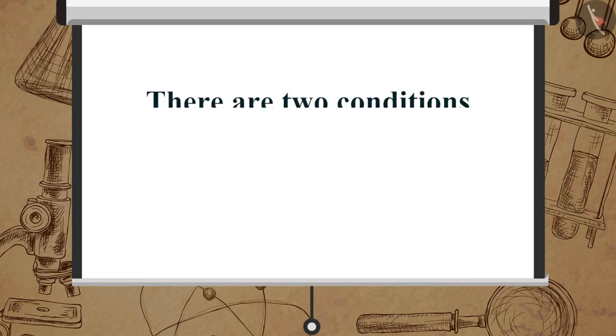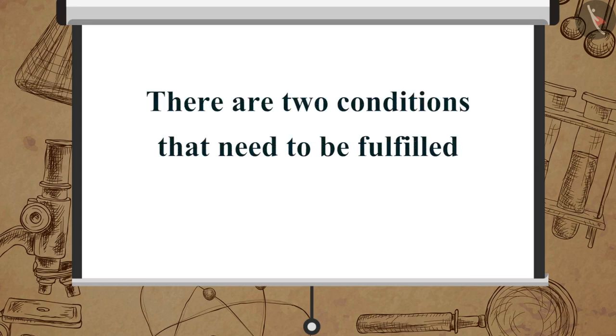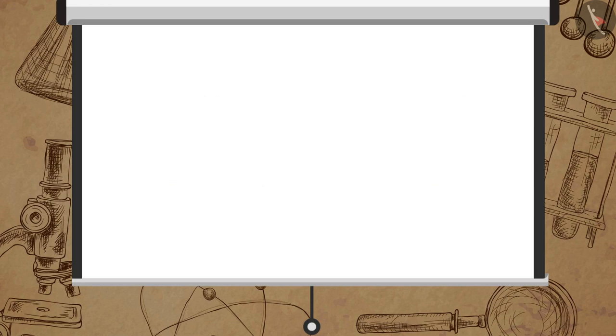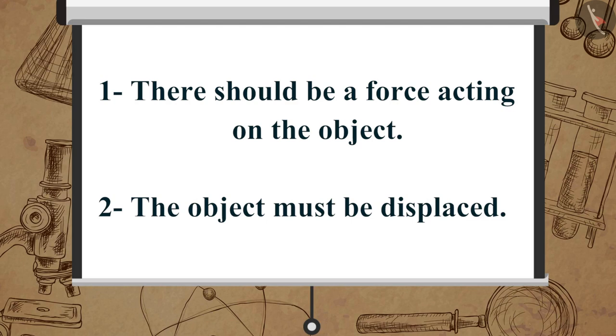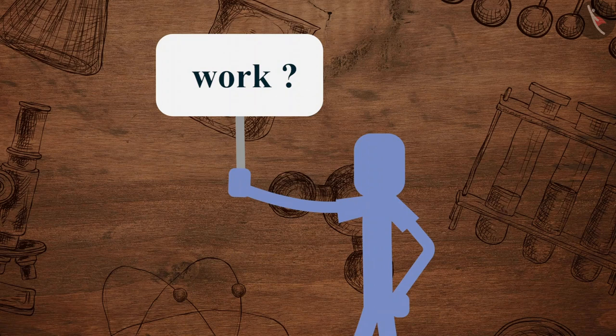In this situation there are two conditions that need to be fulfilled for the work to be done. One: there should be a force acting on the object. Two: the object must be displaced. If any of the two conditions are not met, work is not considered to be done according to science.